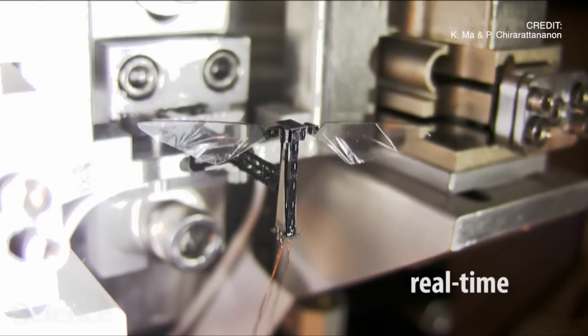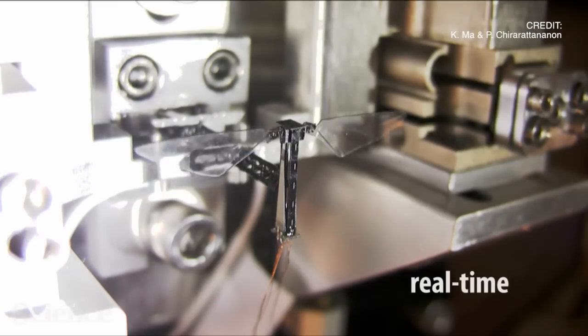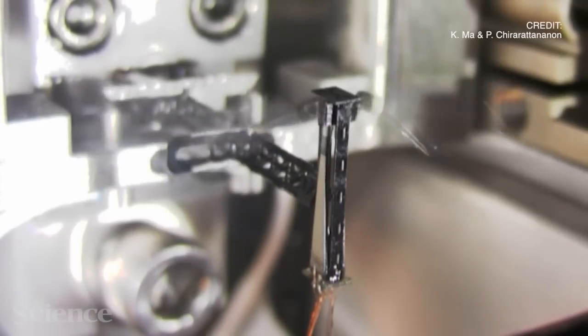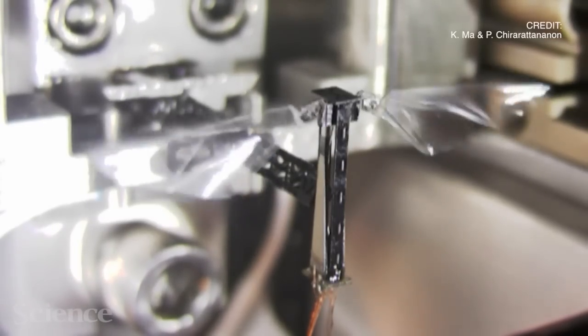Each wing flaps and rotates independently, allowing the robot to immediately self-correct its position and orientation. The wings can flap at nearly the same frequency as flies of comparable size, approximately 120 beats per second.